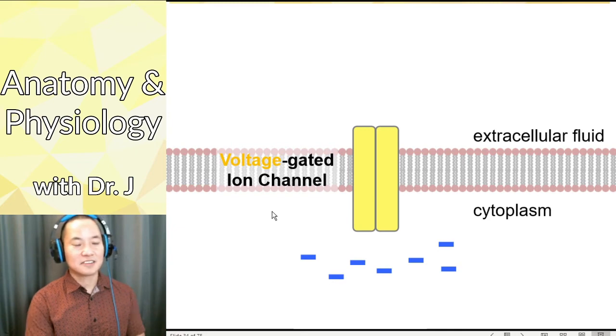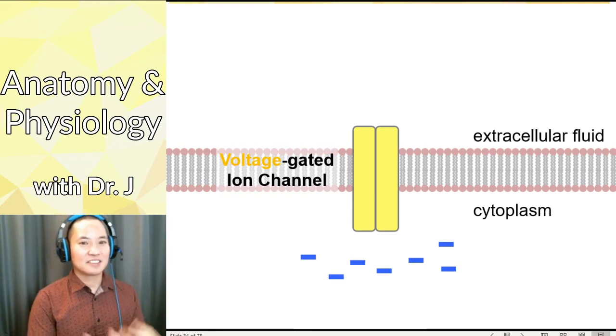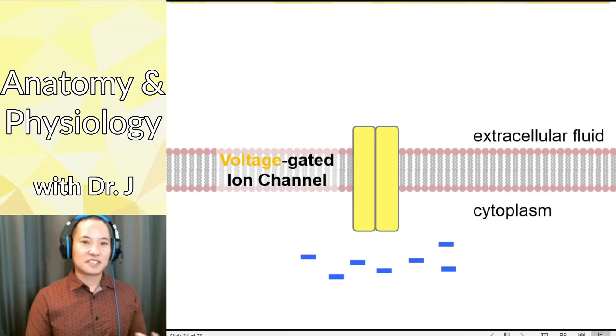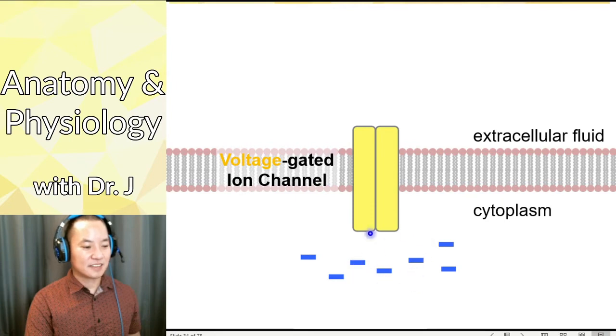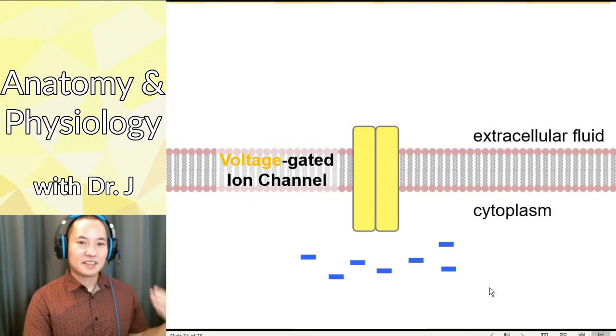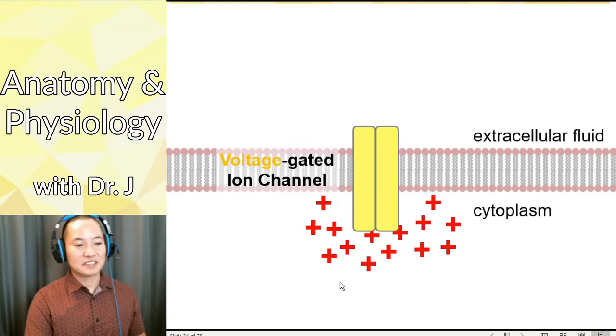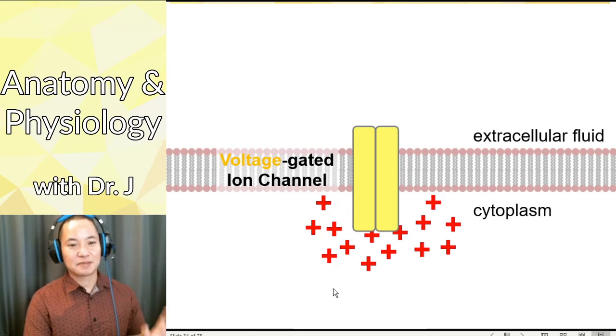Now voltage-gated ion channels, they're kind of like electronic locks or combination locks. You have to dial it to the right number for it to open. So voltage-gated ion channels, what happens is that when the environment - we have both cations and anions, we have all these ions in the cytoplasm and extracellular fluid. But sometimes when the balance shifts from maybe it's really negative inside of a cell, but all of a sudden becomes very positive.